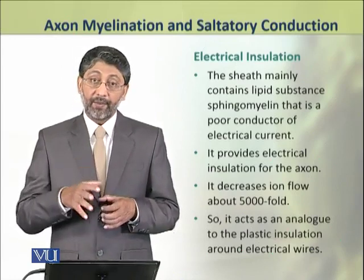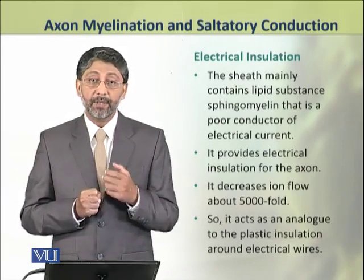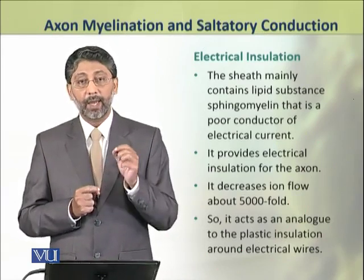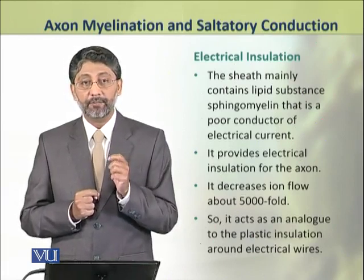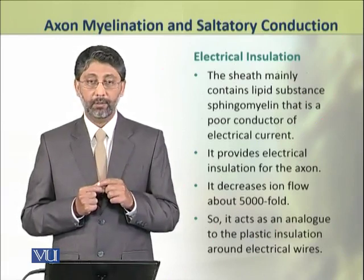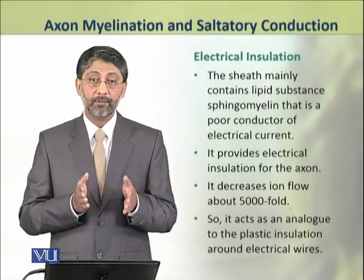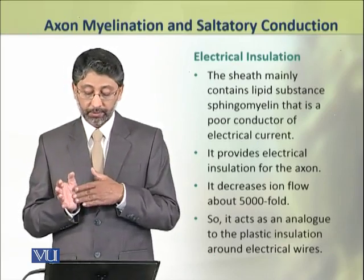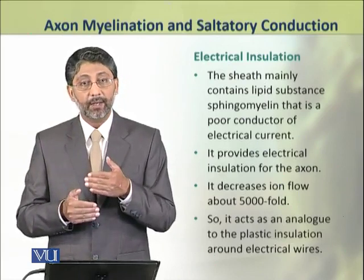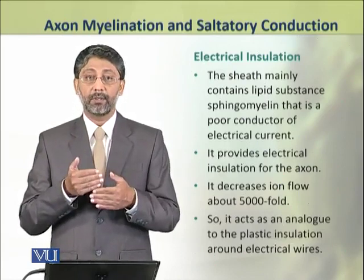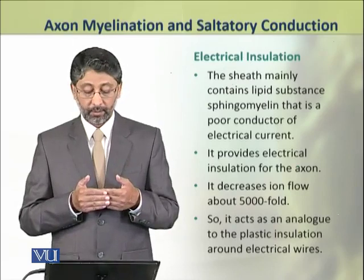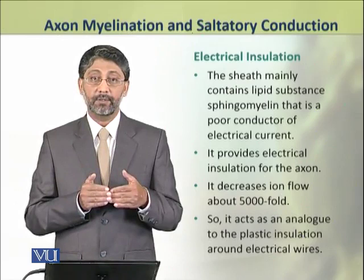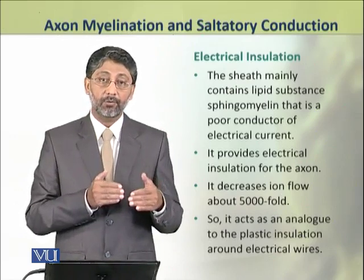As the sheath mainly contains the lipid substance sphingomyelin, which is actually a poor conductor of electric current, this substance provides electrical insulation to the axon — just as electric wires are insulated around the copper wires. It decreases ion flow loss significantly.